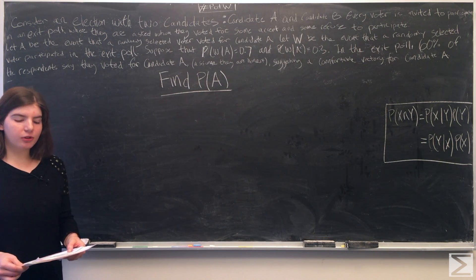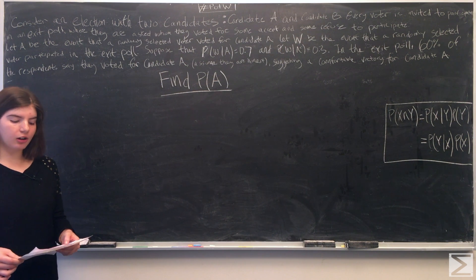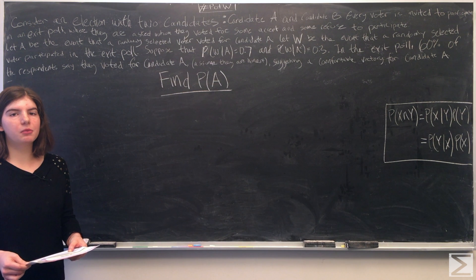In the exit poll, 60% of the respondents say they voted for candidate A. Assume that they are all honest, suggesting a comfortable victory for A. Find the probability of A.